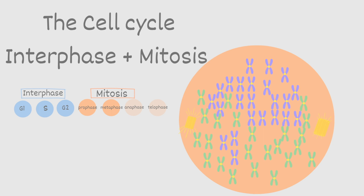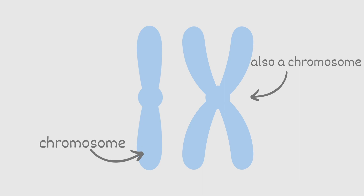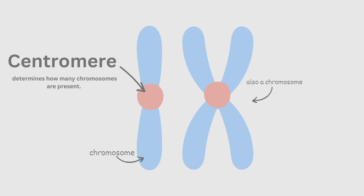Before we begin, I want to make sure everyone has a solid understanding of what a chromosome and a chromatid are. Here we have a chromosome, and here we also have a chromosome. Chromosomes can come in different shapes and commonly are seen like these two here. This circle in the center of the chromosome is called a centromere. This centromere determines how many chromosomes are present — one centromere equals one chromosome.